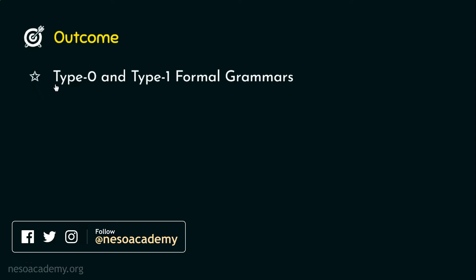Coming to the outcome of this session, today we will observe the first two types, that is, type 0 and type 1 formal grammars. Basically, in this session and in the next session as well, we will learn how the different types of formal grammars were derived.